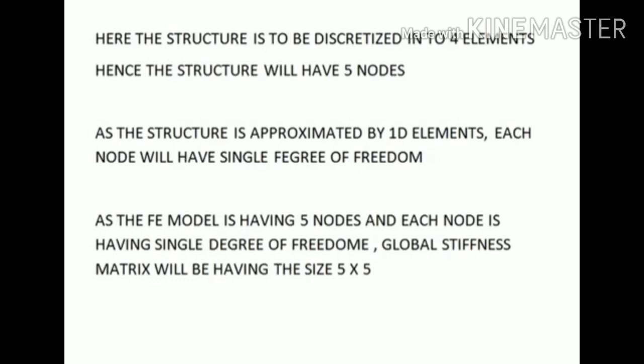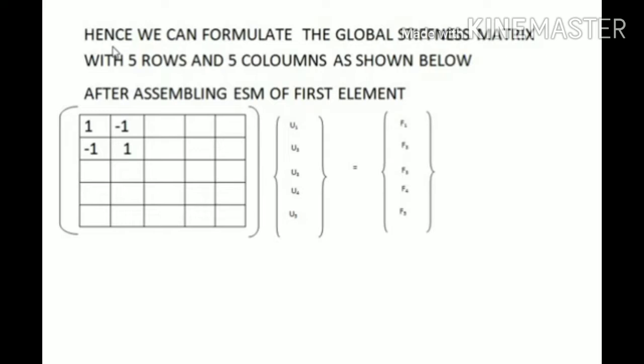The next step is to formulate the element stiffness matrices. The element stiffness matrix for each element is Ae/L multiplied by [1, −1; −1, 1], applied to [U1, U2] = [F1, F2] for the first element, and likewise for subsequent elements. Since we already studied this in previous videos, I am skipping that step and proceeding directly to formulate the global stiffness matrix.